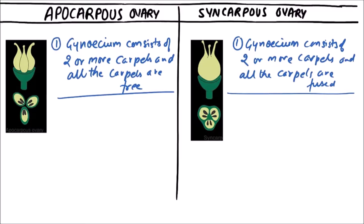It is clearly observed in the diagram that in apocarpus ovary the carpels are free, while in syncarpus ovary the carpels are fused at the level of the ovary.